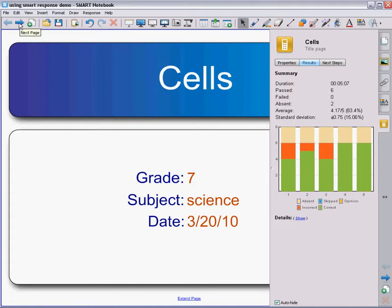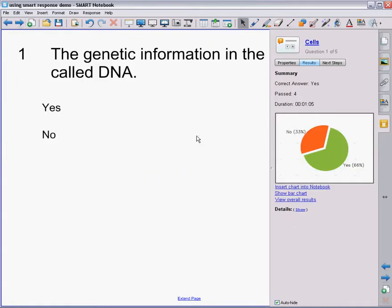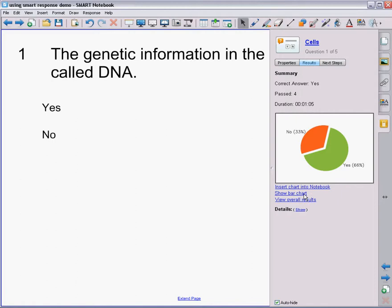I can also go look question by question. By going to the next page, there was question one. I now have my pie chart, just like a single question did, that tells me how many students got it correct in green, how many got it wrong in red. Again, I can show a bar chart instead of the pie chart.